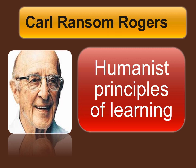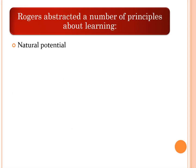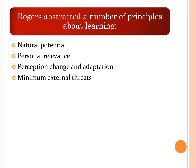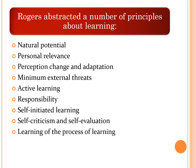During this process, a person forms a structure of self or self-concept. A positive self-concept is associated with feeling good and safe; a negative self-concept may cause unhappiness with who they are. Rogers divided the self into two categories: the ideal self and the real self. He abstracted principles of learning such as natural potential, personal relevance, perception change and adaptation, minimum external threats, active learning, responsibility, self-initiated learning, self-criticism, and self-evaluation.